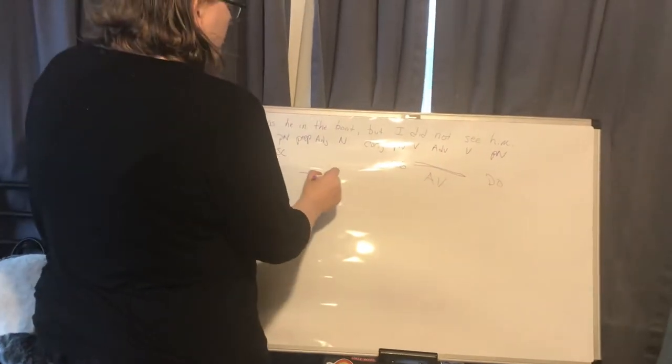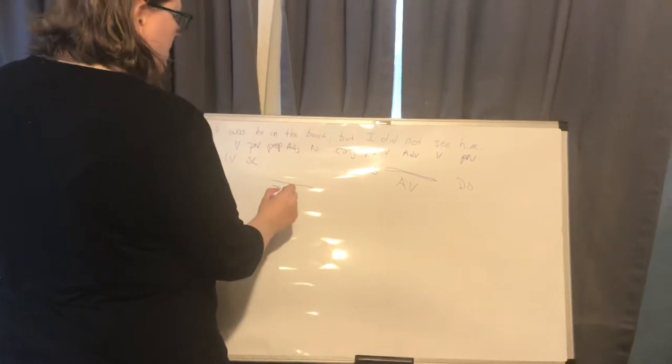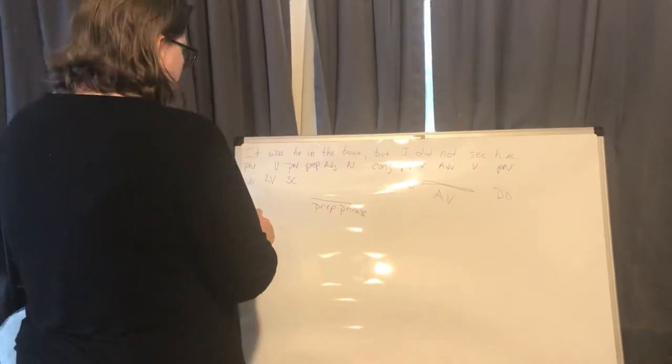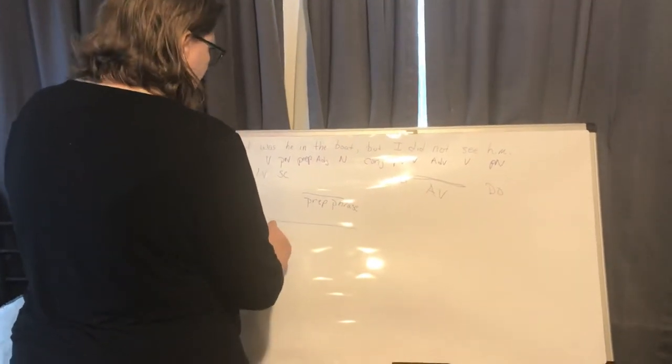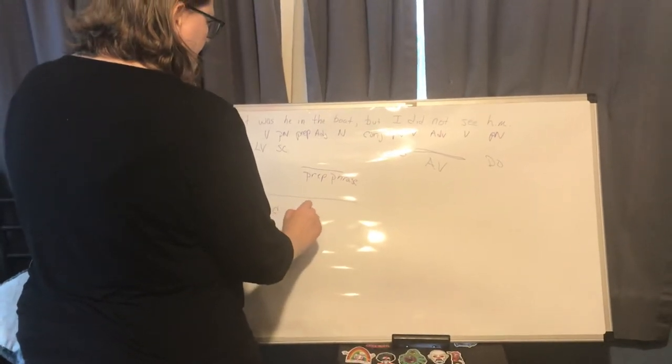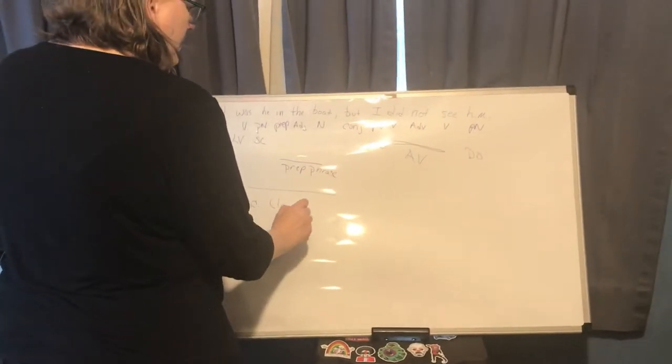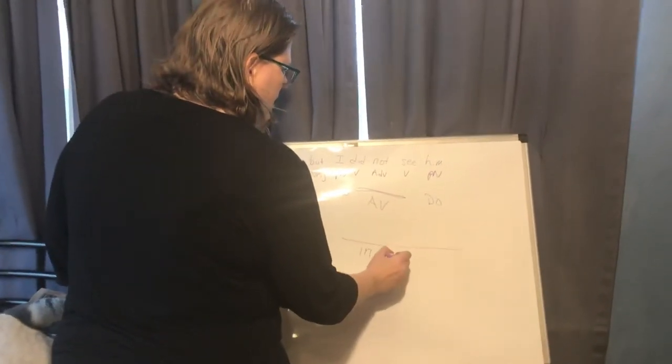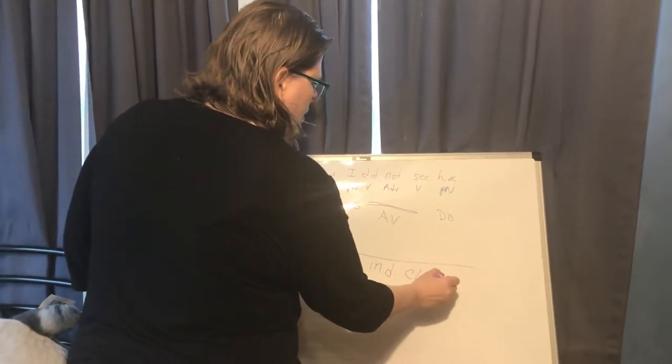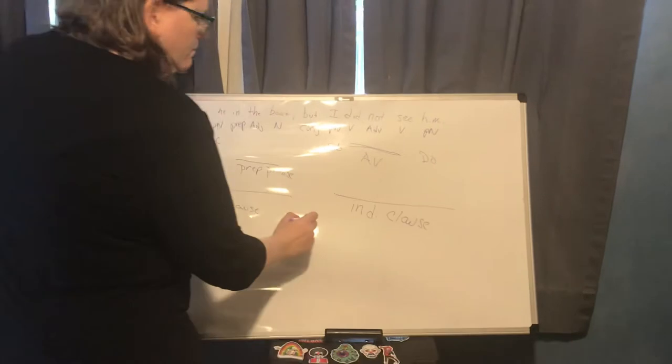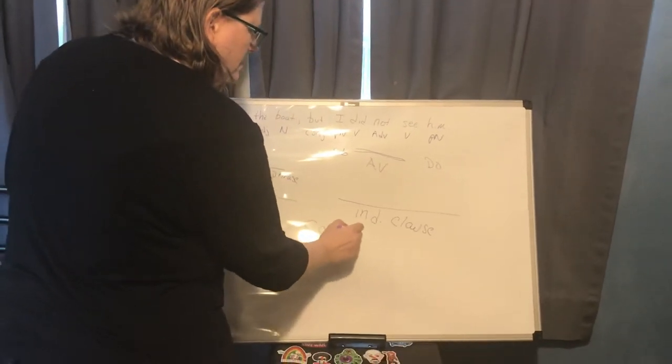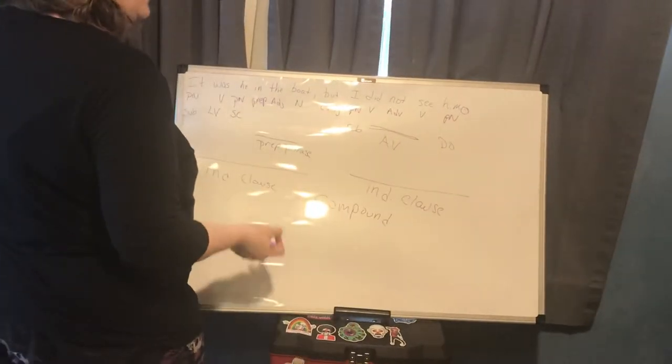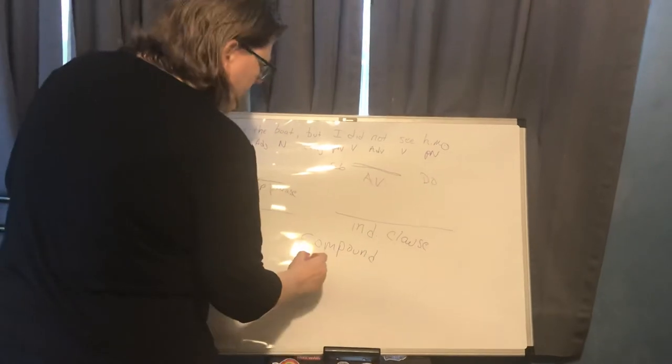We have one prepositional phrase: in the boat. It was he in the boat is an independent clause. I did not see him is a second independent clause. Two independent clauses makes for a compound sentence. Our punctuation is a period and this is giving us information, so this is a declarative sentence.